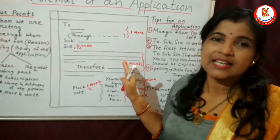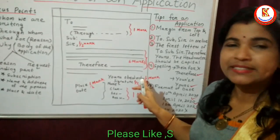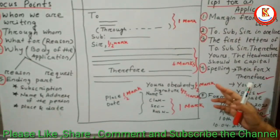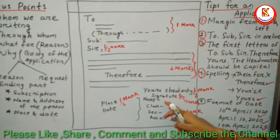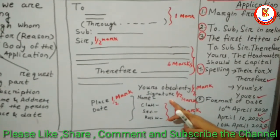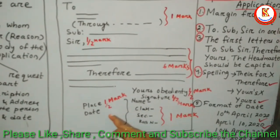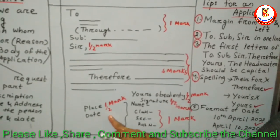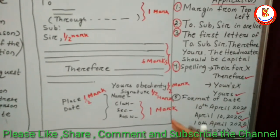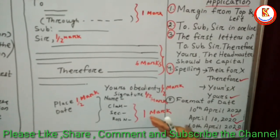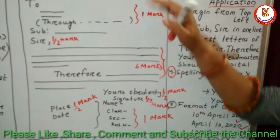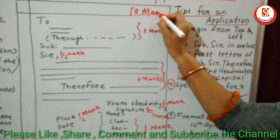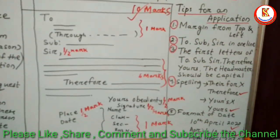For the content or body, you will get six marks. For 'Yours obediently' — the subscription part — if written correctly, you get half a mark. For the signature, there is half a mark. For place and date — written in the correct format — you get half a mark. Finally, for the address of the applicant, you get one mark. In total, there are 10 marks for an application.